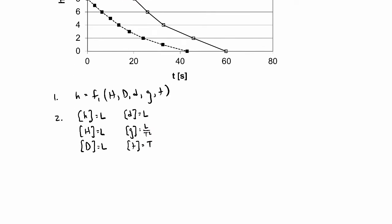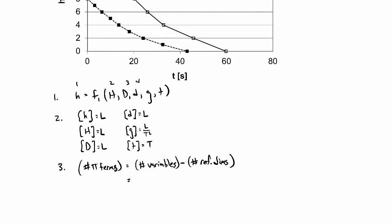Step three is to determine the number of pi terms using the Buckingham Pi theorem. The number of dimensionless pi terms equals the number of variables minus the number of reference dimensions. We have six variables, and we need two reference dimensions — length and time — since gravity already contains both. So we should expect four dimensionless pi terms.